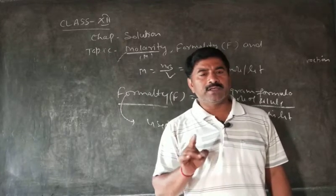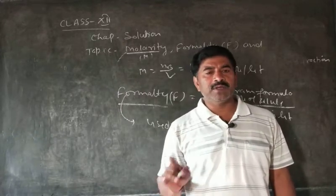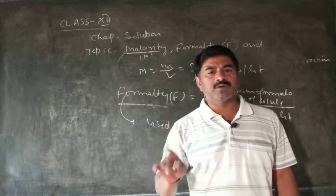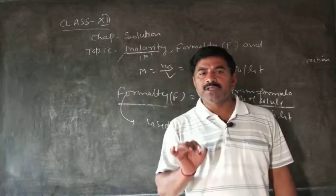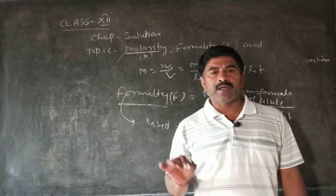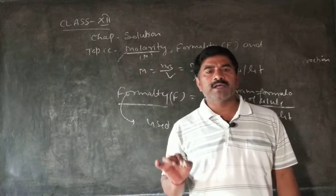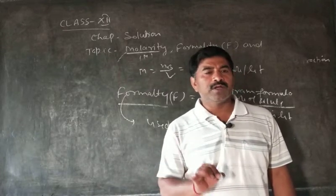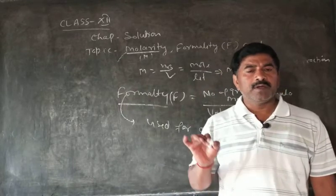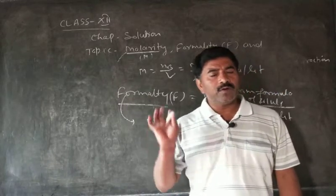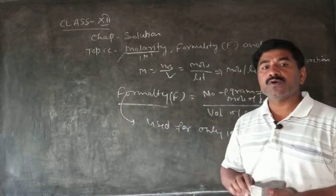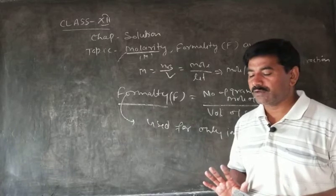Formality is equal to NB upon V, where NB is equal to the number of moles of solute upon the molar mass of solute, so formality = WB / (MB × V). If volume is taken in milliliters, then formality = WB / (MB × V) × 1000. The unit of formality is mole per liter.